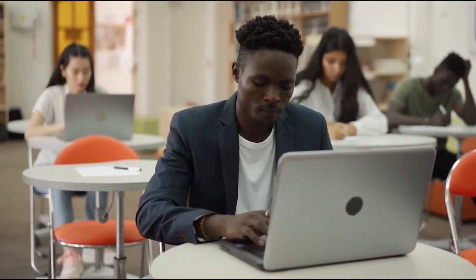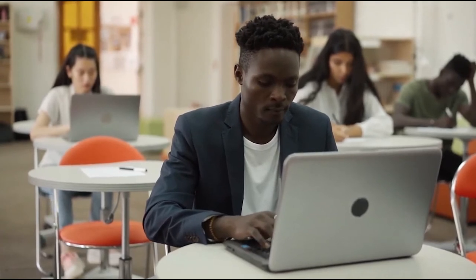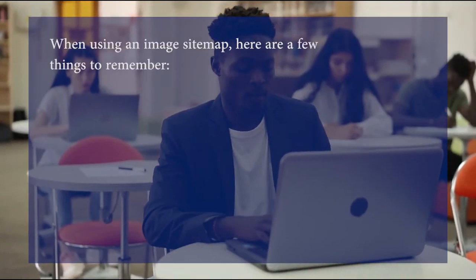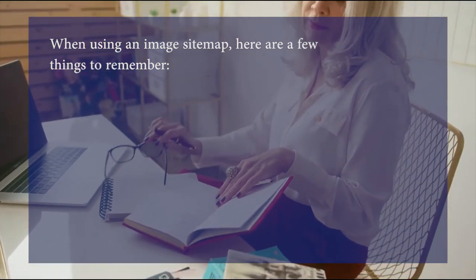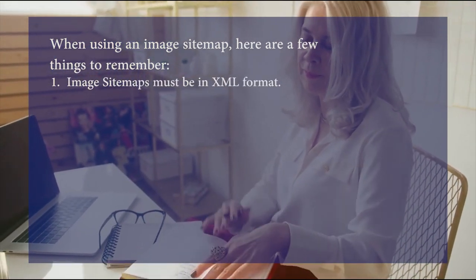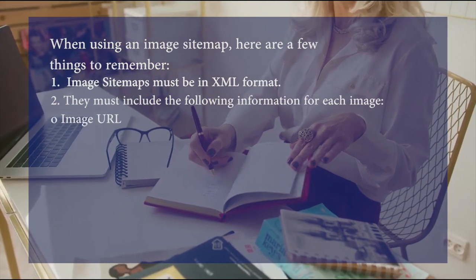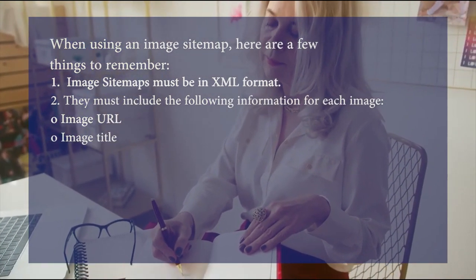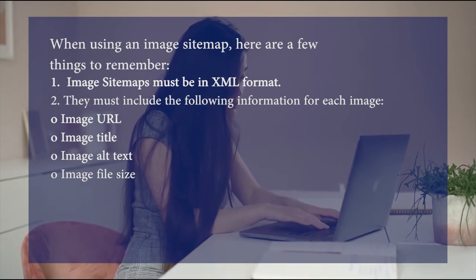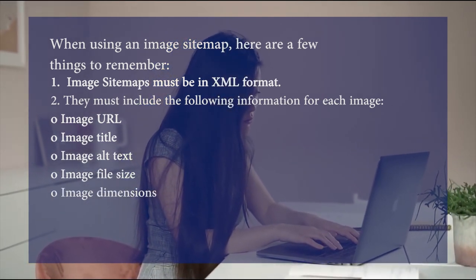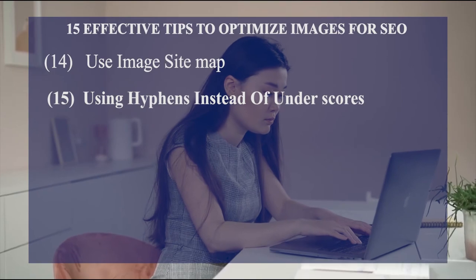Tip fourteen: use image sitemaps. Image sitemaps are vital tools that help communicate your image descriptions to search engines. Tools like Google Search Console can help improve your website ranking. Image sitemaps must be in XML format and should include for each image: the image URL, title, alt text, file size, dimensions, and date.